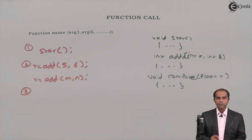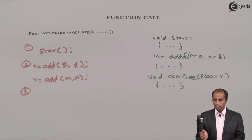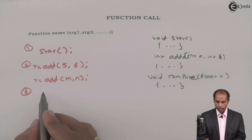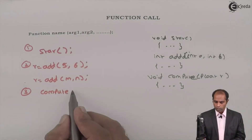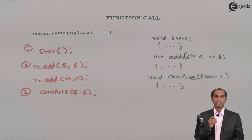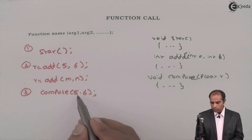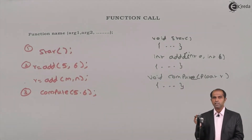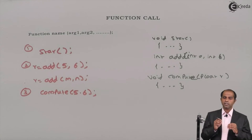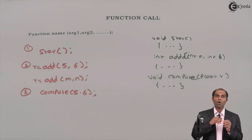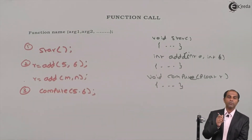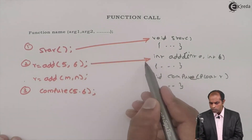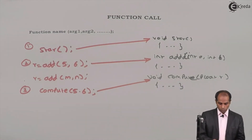For the third function, compute: there is no return type, so there should be no variable on the left-hand side. The function name is compute, and it accepts one value of type float. So I write compute(5.6) followed by a semicolon. The value 5.6 goes to r, the function does its task and displays the result — area and circumference. The definition may exist outside while the call resides within main, and star, add, and compute each call their respective definitions.